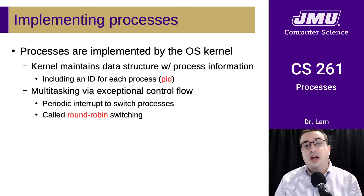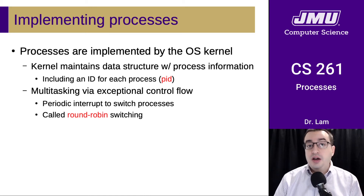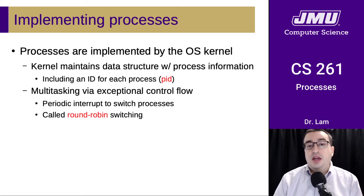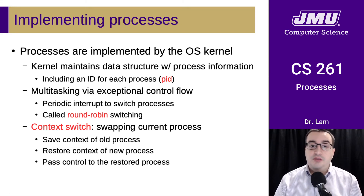The operating system can allow multiple processes to appear as though they're running simultaneously on a CPU by periodically interrupting the running program, pausing it, saving its state, and switching to a new process. Giving each process a turn is referred to as round-robin switching. The process of switching between processes is called a context switch and involves three steps. First, you save the context of the old process, including any registers and other information needed to resume it, including the program counter at its current execution point.